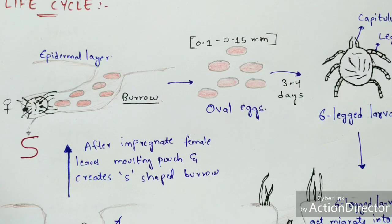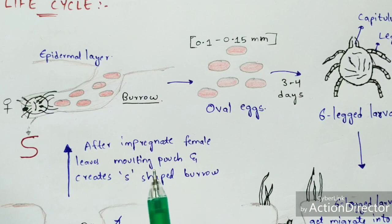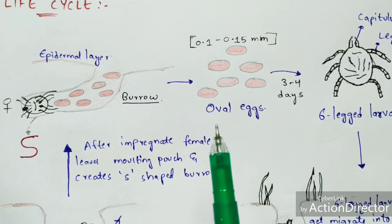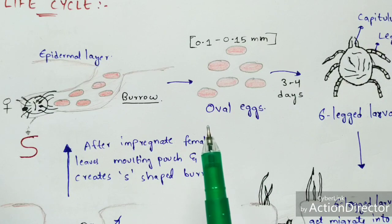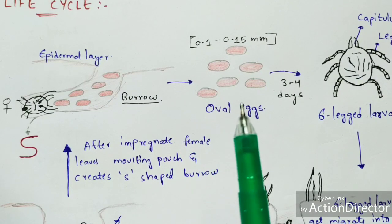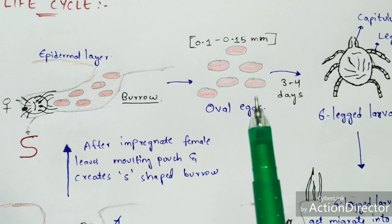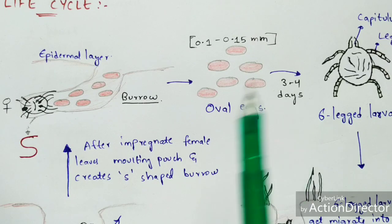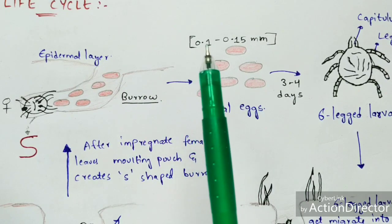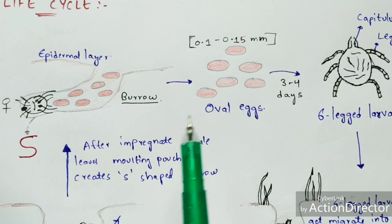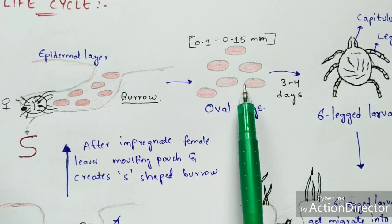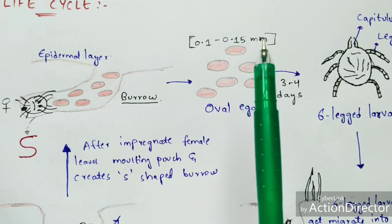Scabies causes symptoms of itching and rashes at the skin region. The epidermis is the upper layer of the skin, and the entire life cycle of the itch mite occurs at the epidermal region. The oval eggs are laid at the epidermis region within a structure called a burrow.